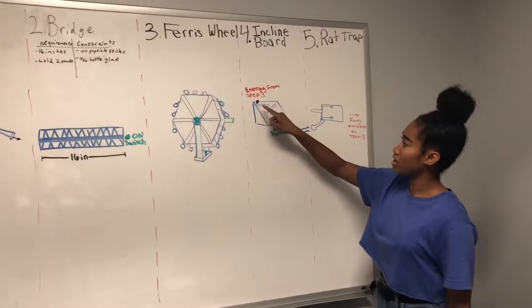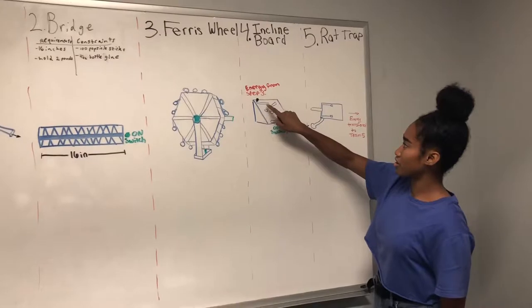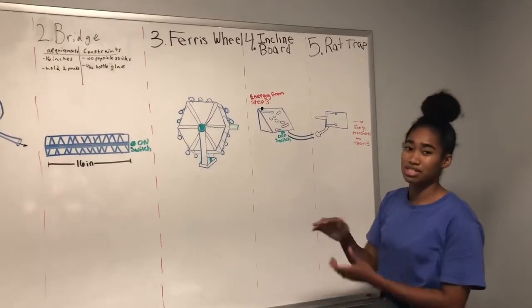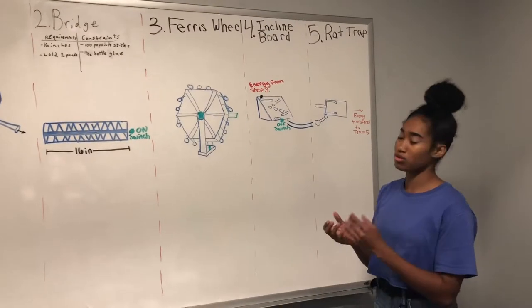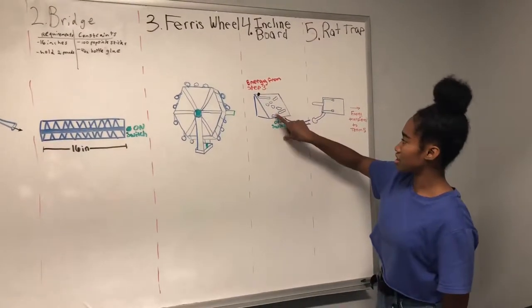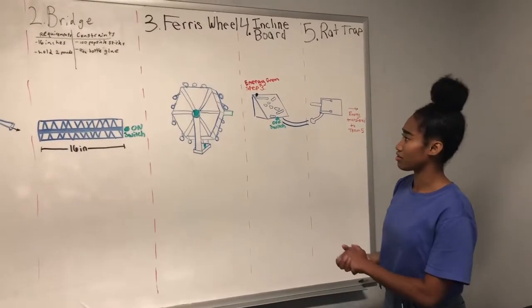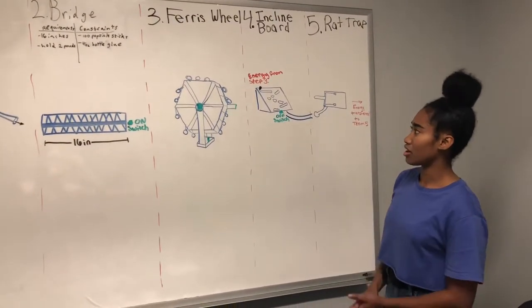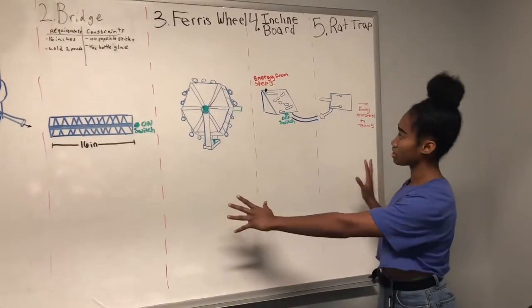And the steel ball is going to roll down this incline plane, and here, these little objects are either going to be semi-cut tubes or old paper towel rolls. And once it gets to the end, it's going to land on this button, which is going to turn off this Ferris wheel, which will complete our requirements for the two switches we need for our whole group Rube Goldberg section.